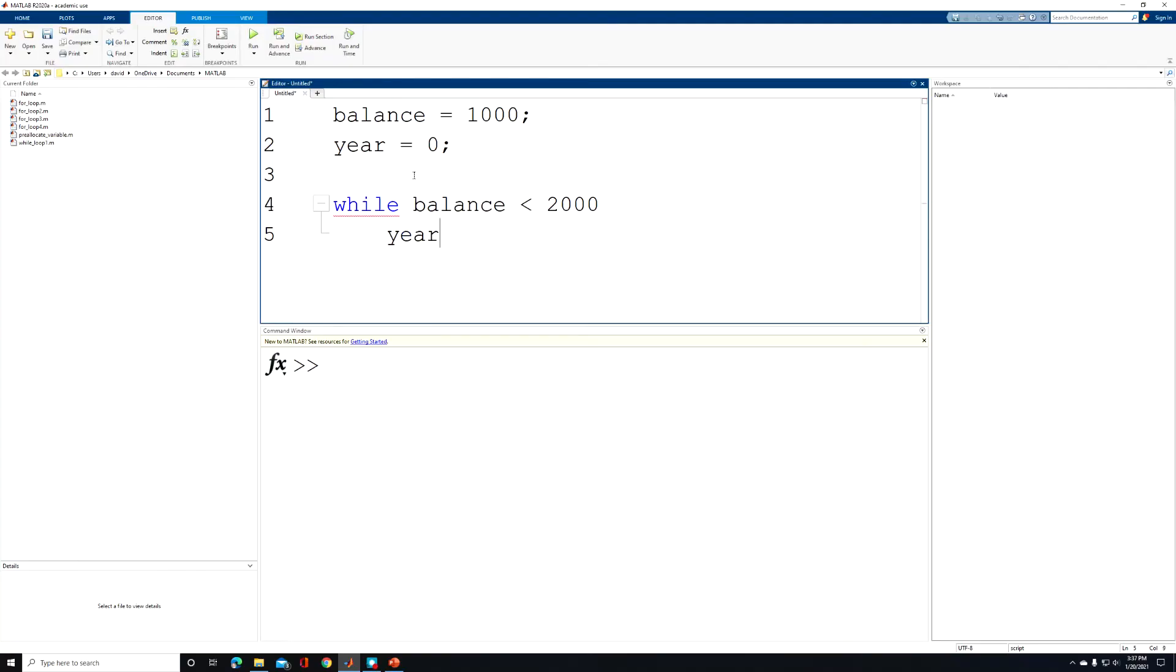First, we increment the year. So our new value of the year is assigned the value of our current value for the year plus one to increment the year by one with each loop pass. And I'm going to add a semicolon here to suppress the output and click enter. And we'll begin our next line of code for our balance.